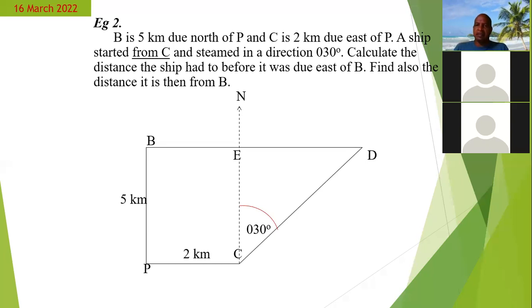Student asks: Where the dotted north line is, sir, could we assume that also to be the five kilometers, since it would have been a parallel line running with the line BP? Teacher responds: We are saying that at point E, E to C, could we also call it five kilometers as well, since it is parallel to BP? Sure.